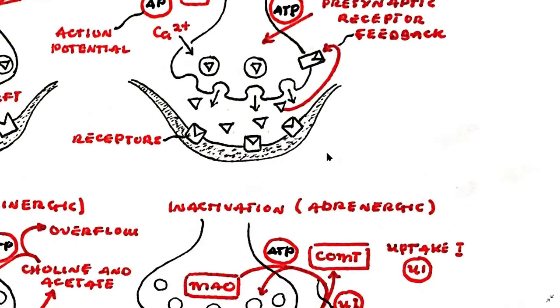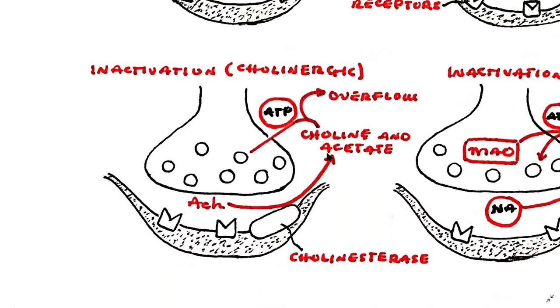Neurotransmitters must be removed at the end of activation. In cholinergic synapses, cholinesterase rapidly breaks down acetylcholine into choline and acetate, which are recycled. However, some may escape into interstitial fluid.